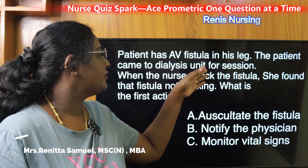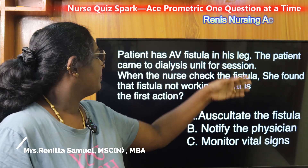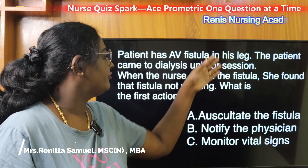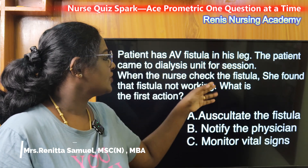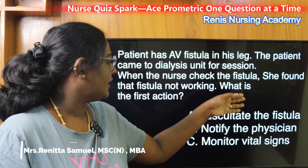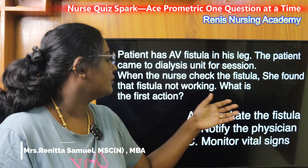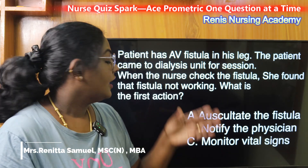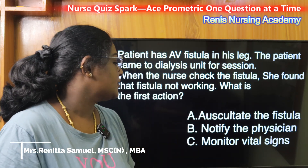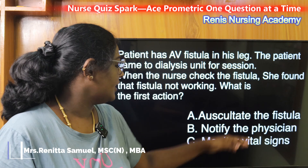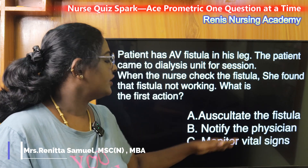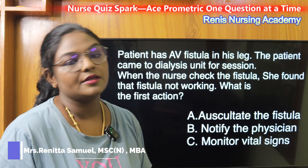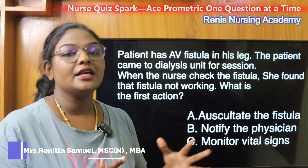A patient has an AV fistula in his leg. The patient came to the dialysis unit for a session. When the nurse checked the fistula, she found that the fistula is not working. What is the first action? The options are: auscultate the fistula, notify the physician, and monitor vital signs.